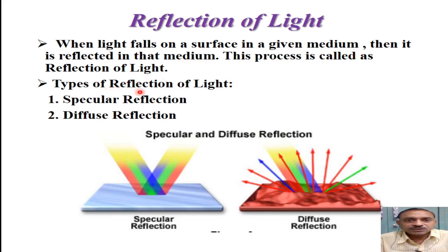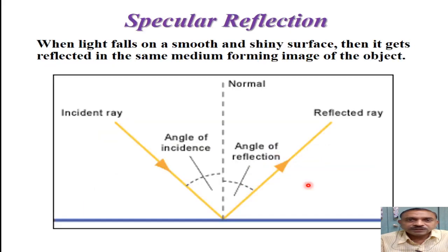There are two types of reflection of light. One is the specular reflection. Another is the diffuse reflection. In specular reflection, the light is reflected back giving its image, while in diffuse reflection, it is being scattered in all directions. Let us understand this by more examples.